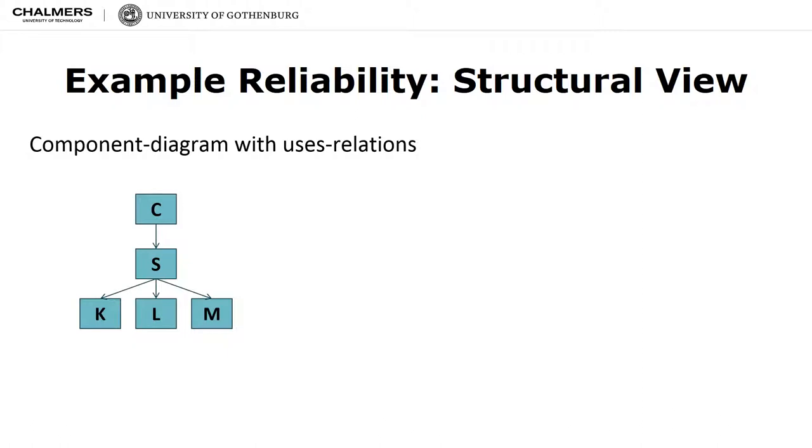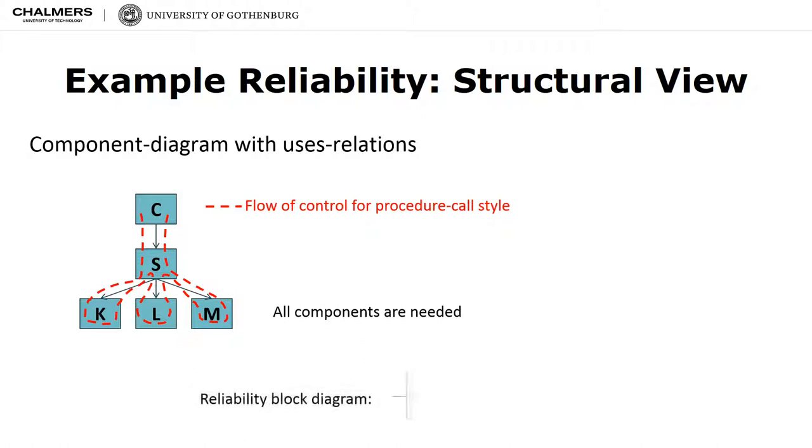The following example illustrates the reliability analysis of a simple system. Consider a system of five components: C, S, K, L and M, arranged as shown on the slide. C and S are clients and servers, and K, L and M are services to S. Now, in addition to the structure of the system, we actually need information about the behavior of the system in order to know if components are mandatory steps in a flow or alternative steps. For this, we would need to know the control flow. The control flow tells us which paths are taken through the system. In this slide, we suppose that all of K, L and M are mandatory. A service needs to be processed by all of them. Therefore, the corresponding reliability block diagram consists of all these components in sequence.